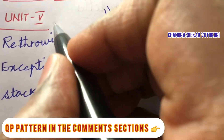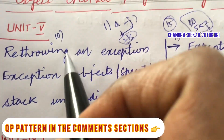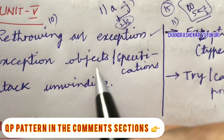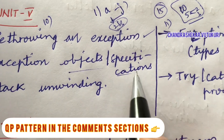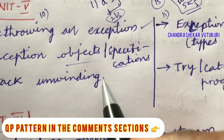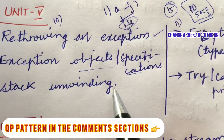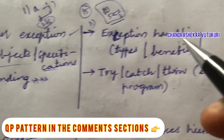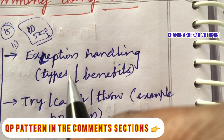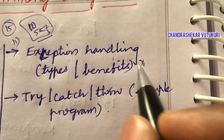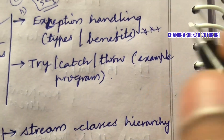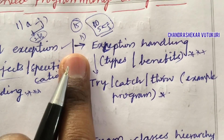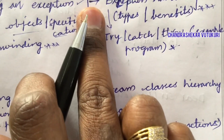The fifth unit — question numbers 10 and 11 — requires you to attempt either 10 or 11. The fifth unit is small in structure: throwing an exception, exception objects, and exception specifications are covered. There are no separate short questions; work out all fundamentals in depth. Stack unwinding is also a very important question that may occur in 10A/10B. Exception handling along with its types and benefits may be a short question. Try, catch, and throw along with programs related to exception handling is a definite question in question 11.